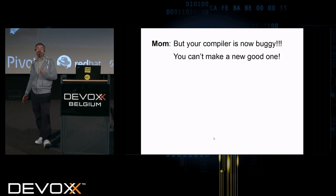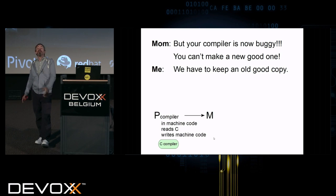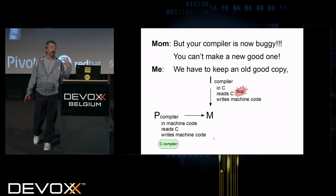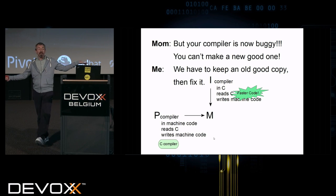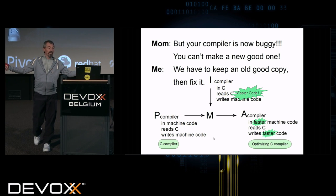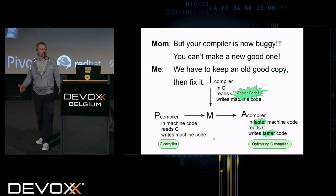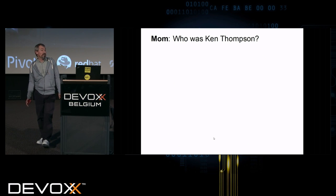But your compiler is now buggy and I'm using the compiler. I can't make a good new one because I'm using the compiler to make my compiler. So we have to roll back. We have to keep a good old copy. And then we can start with the broken C code that has my bug in it and hopefully fix it and make faster code out. Who is Ken Thompson? And what was this hack?